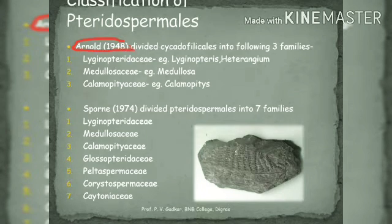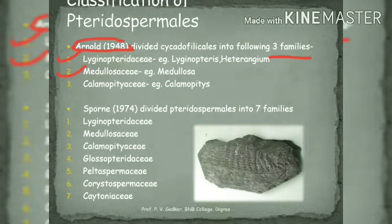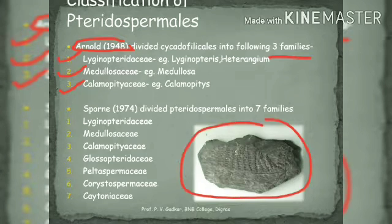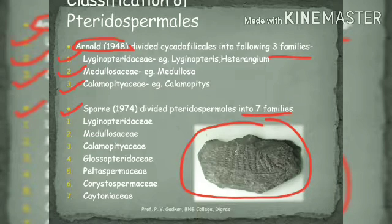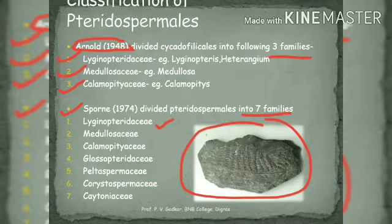Arnold in 1948 divided Cycadofilicales into three families: Lyginopteridaceae, Medullosaceae, and Calamopityaceae — with examples Lyginopteris, Medullosa, and Calamopitys respectively. Later, Spoon in 1974 divided pteridosperms into seven families: Lyginopteridaceae, Medullosaceae, Calamopityaceae, Glossopteridaceae, Peltaspermaceae, Corystospermaceae, and Caytonaceae. We will discuss Lyginopteridaceae in detail.